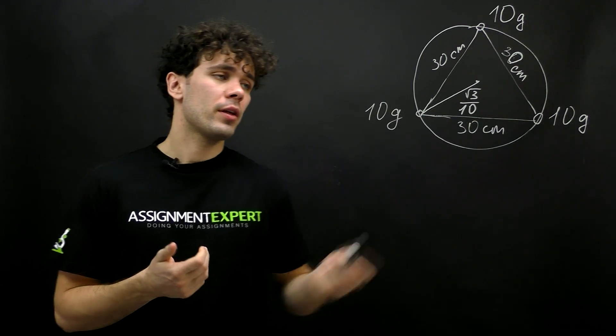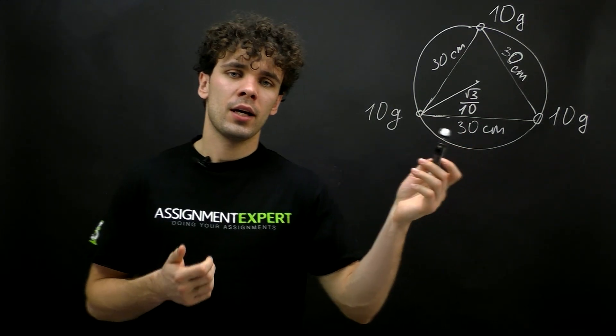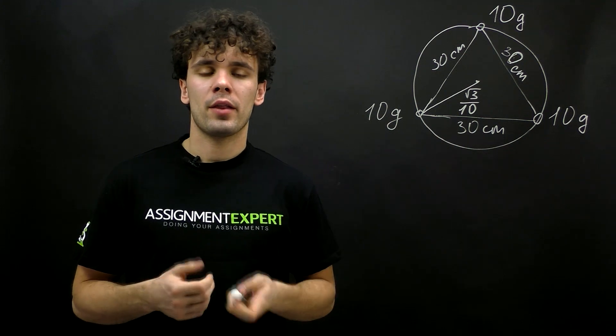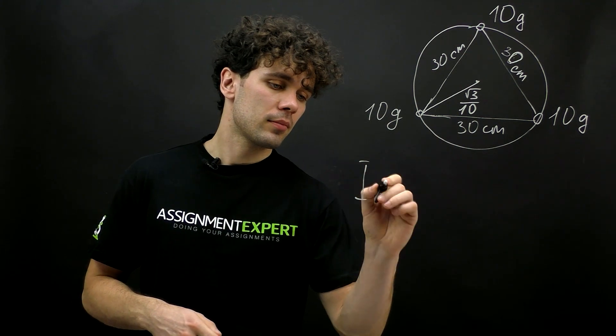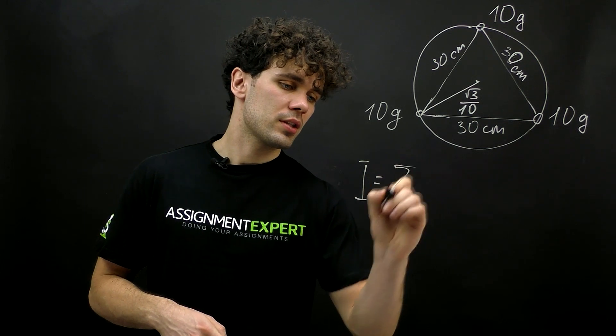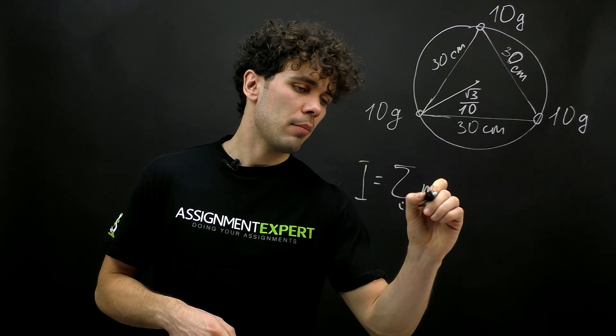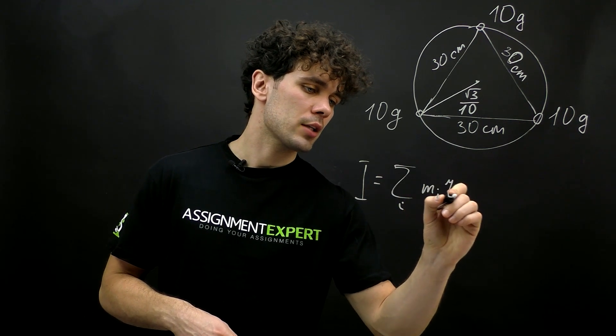Now, as far as we know the location of the center of mass and the axis, we can find the moment of inertia. The formula is I equals the sum of m_i times r_i squared.